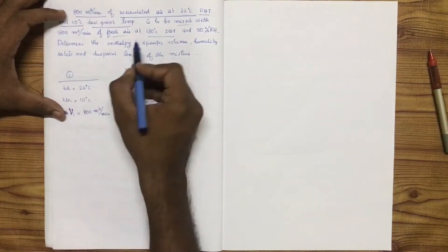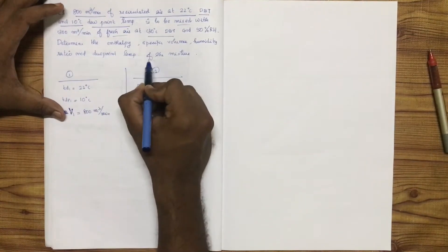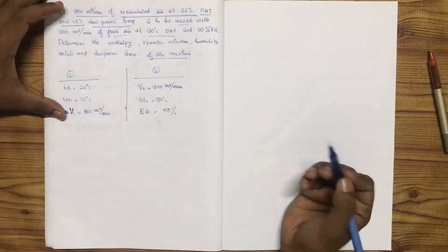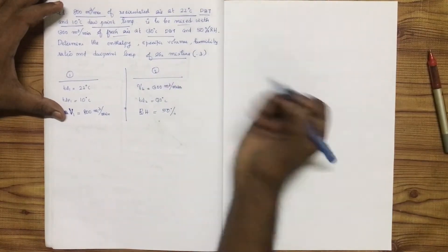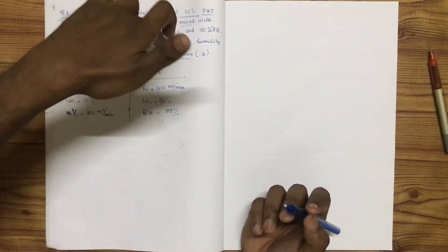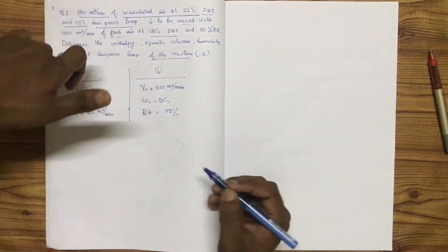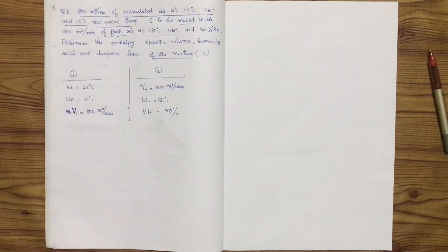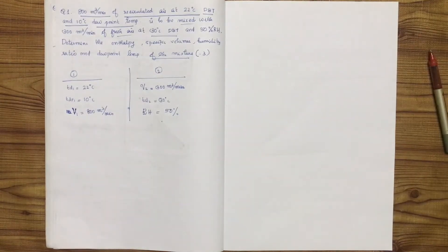After mixing, we need to find: the temperature of the mixture, enthalpy H3, specific humidity W3, percentage humidity, and dew point temperature.